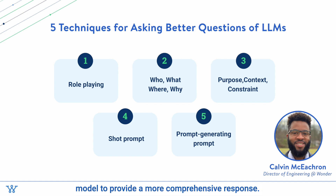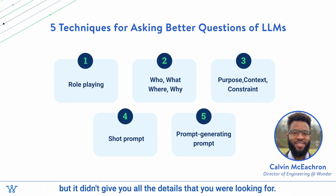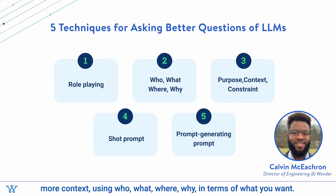The second technique is Who, What, Where, Why. This one is really good when you're trying to get the model to provide a more comprehensive response. Maybe you've asked it for something and it gave you a response, but it didn't give you all the details you were looking for. It might be a good idea to frame the question again with a little more context using Who, What, Where, Why.